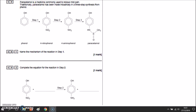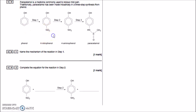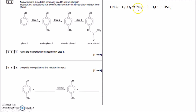Question 8: paracetamol has traditionally been made industrially in a three-step synthesis from phenol — a benzene ring with an OH group. Step 1 involves an NO₂ group being added to the ring. To add a group to a benzene ring, make it a positive species: NO₂⁺, the nitronium ion. This is made by mixing nitric acid HNO₃ with sulfuric acid H₂SO₄, producing NO₂⁺ plus water and hydrogen sulfate.